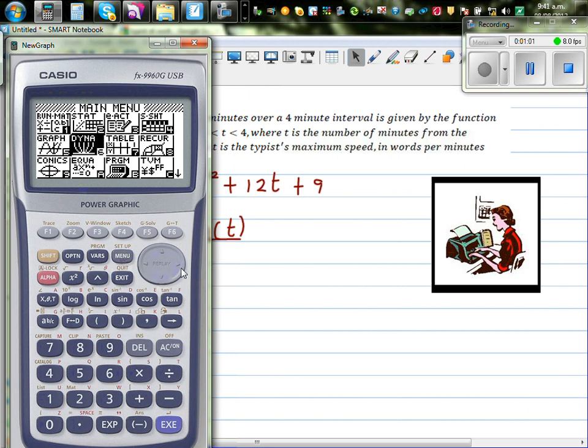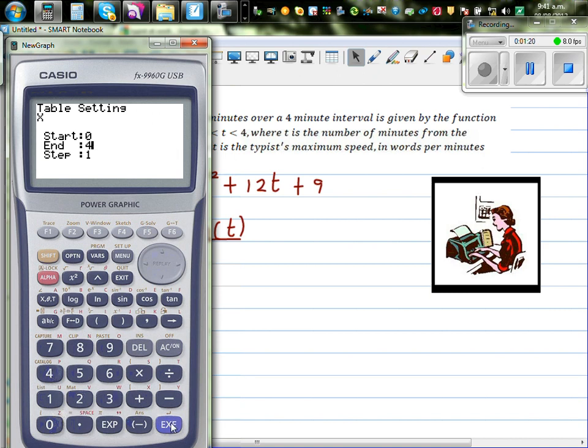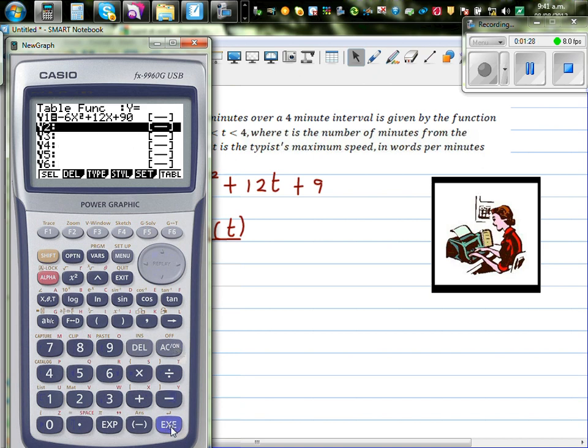So let us use a calculator to write and find these values. So go to table and type in the equation -6x² + 12x + 90. Just to have a sense of what's happening, I'll go from 0 to 4, actually less than 4. Let us go 0 to 4, it doesn't matter. It will not include 4. Step of 1.